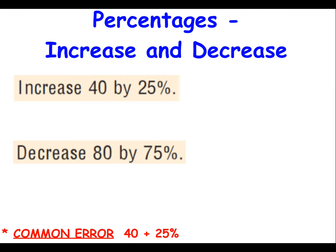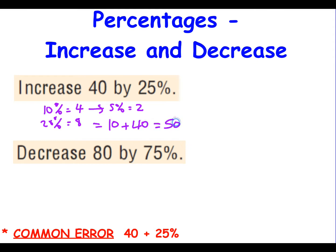Here are two examples. To increase 40 by 25%, I first work out 25% of 40. I know 10% is 4 and 20% is 8. 5% gives me 2, so 25% is 10. You could also recognise that 25% is a quarter of 40, which is 10. Because it's an increase, the percentage amount is added to the original: 40 plus 10 gives 50. So increasing 40 by 25% gives us 50.